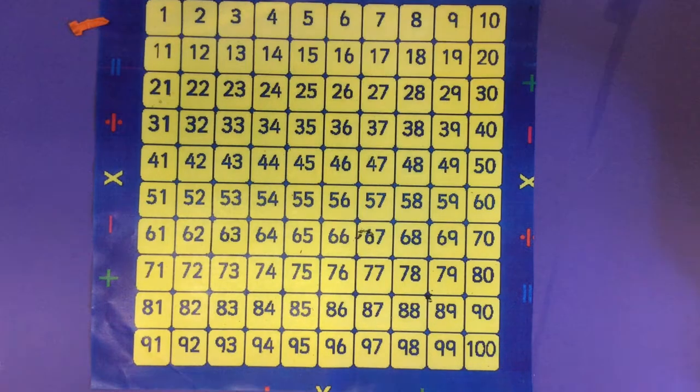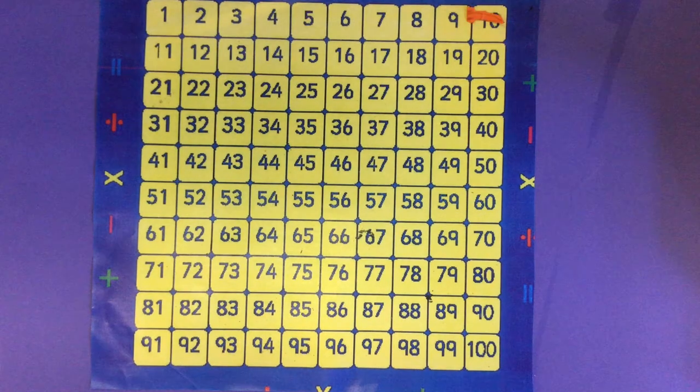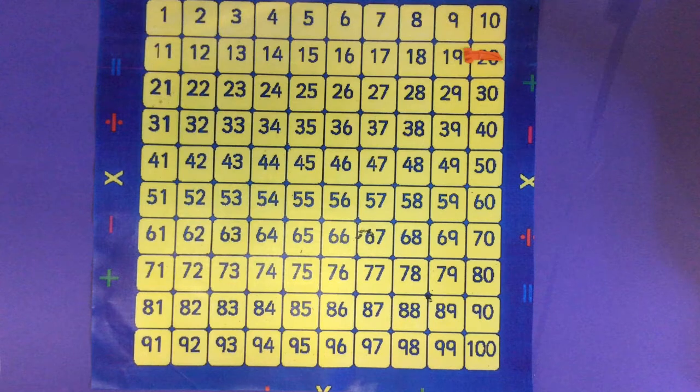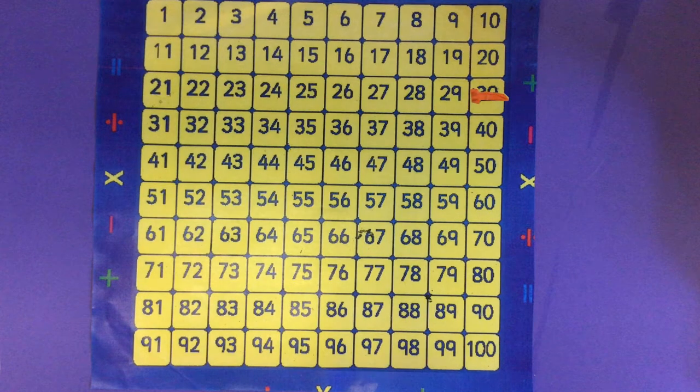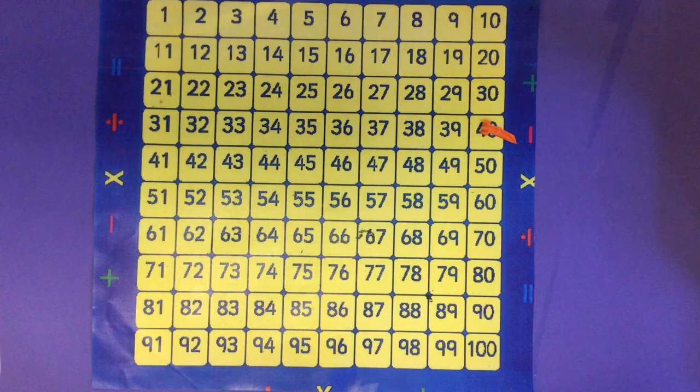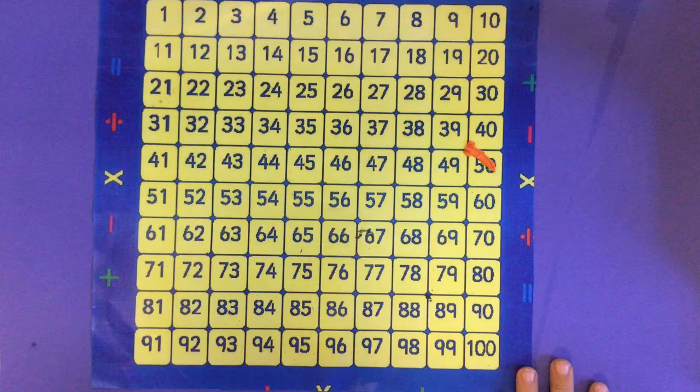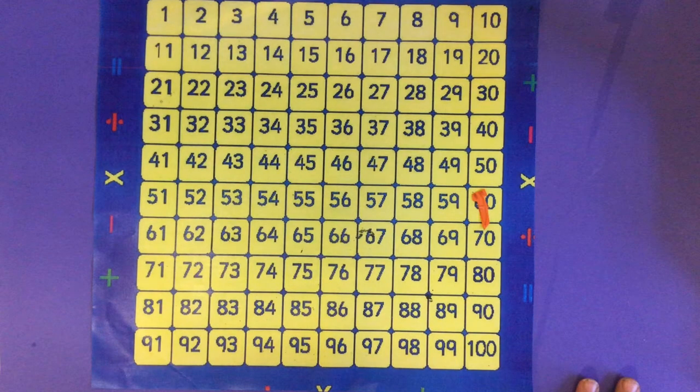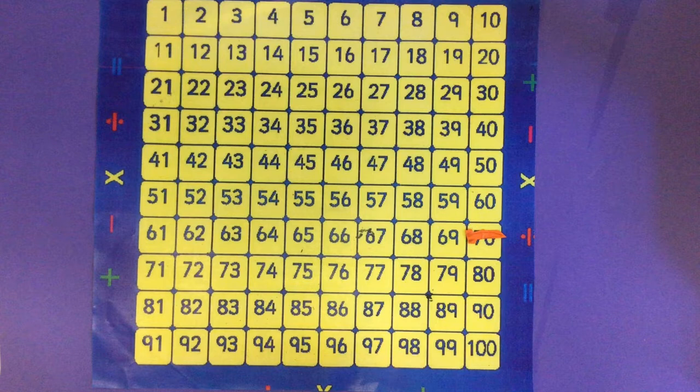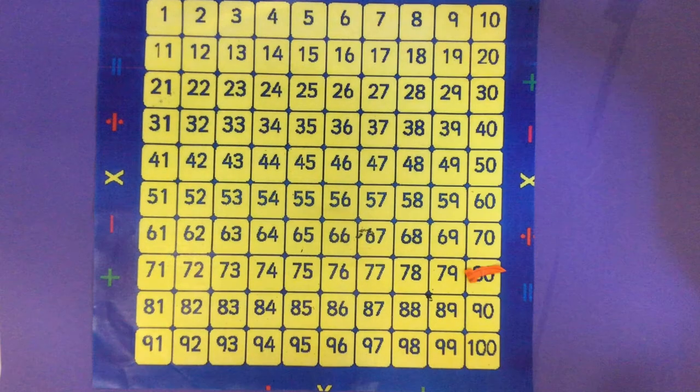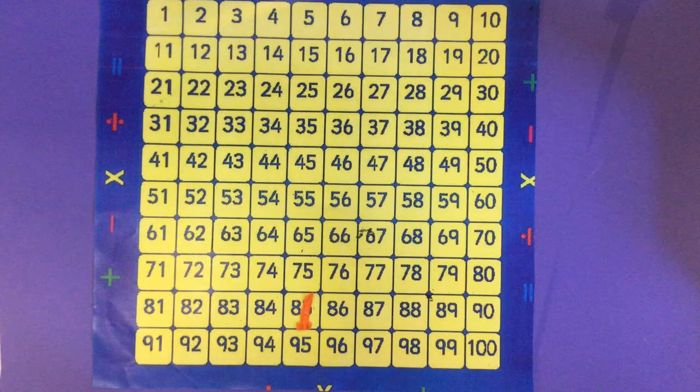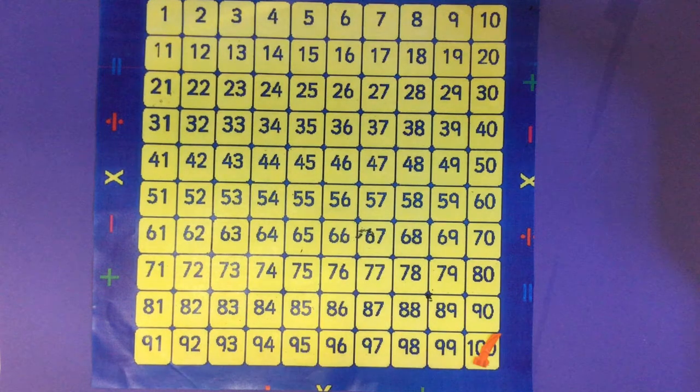We can count in fives. 5, 10, 15, 20, 25, 30, 35, 40, 45, 50, 55, 60, 65, 70, 75, 80, 85, 90, 95, 100.